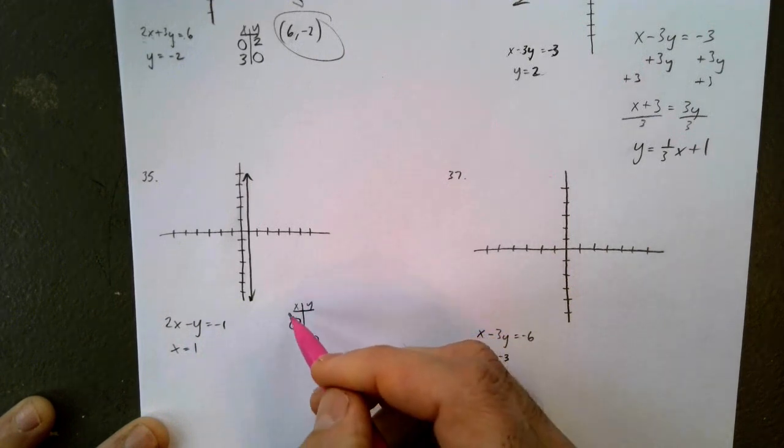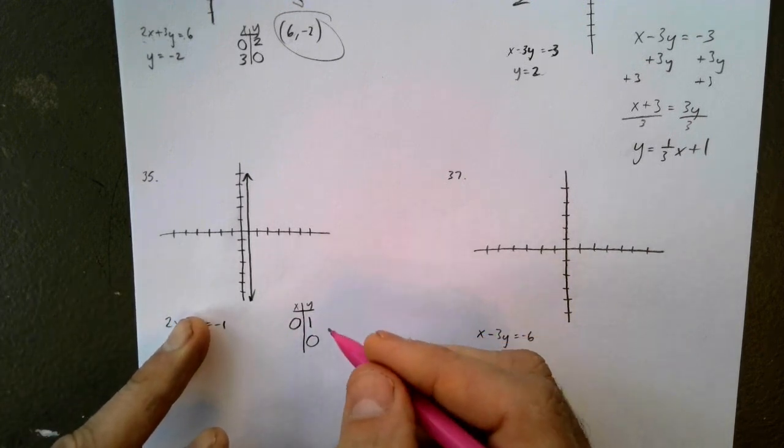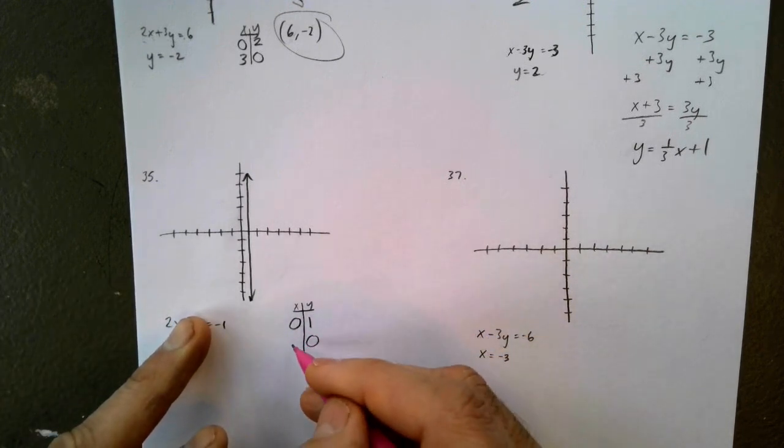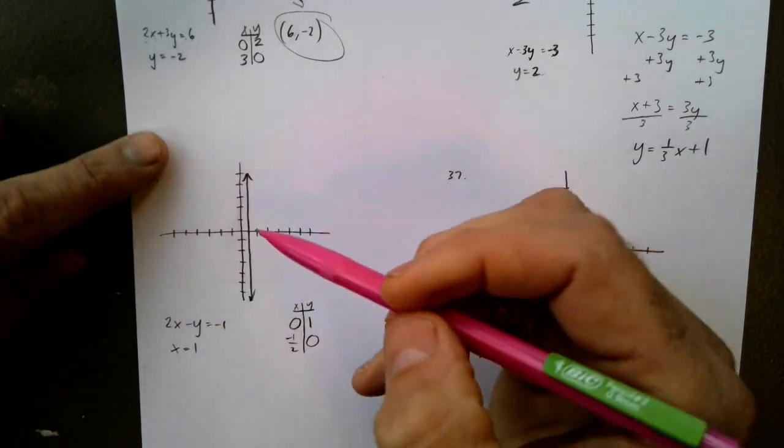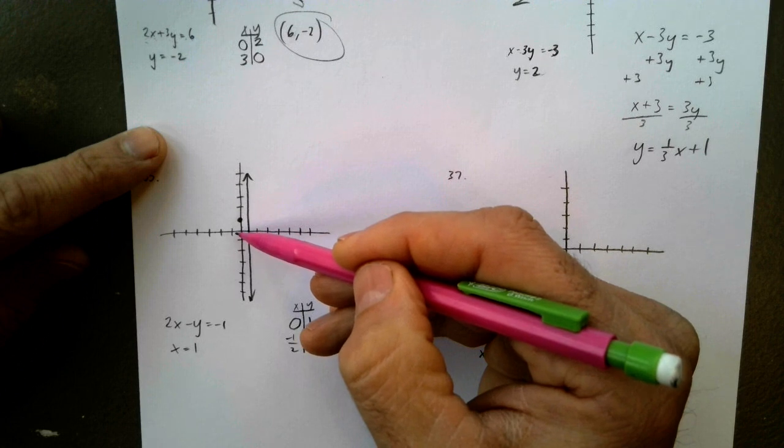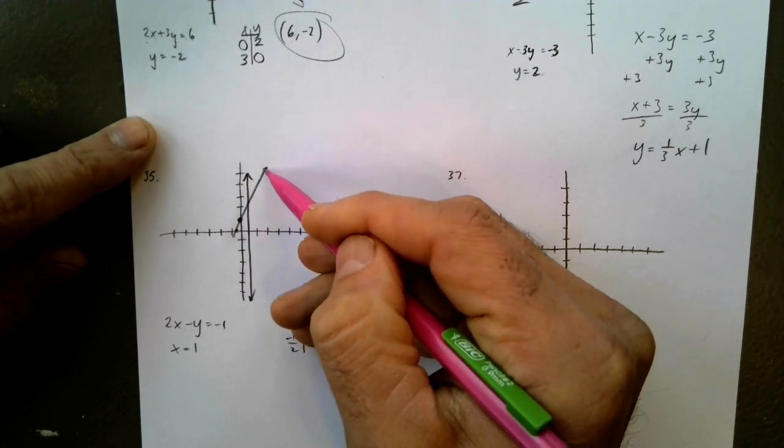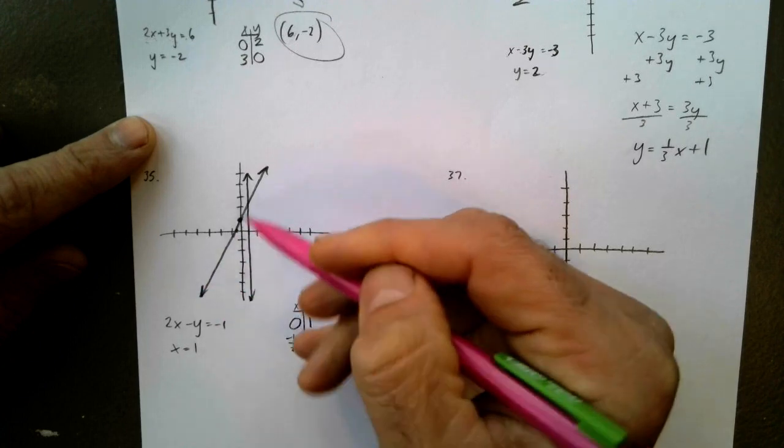Okay. So I've got 0 for x making y 1. And then I've got, oh, got me a fraction. So, negative 1 half. That's okay. So, 0, 1. And then negative 1 half to 0. And graphed.